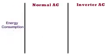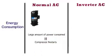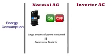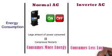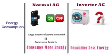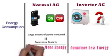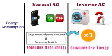In case of normal AC, a large amount of power is consumed every time the compressor restarts, and it is because of this frequent on and off that this type of air conditioner consumes more energy. Whereas inverter AC consumes less energy. The reason is that when the compressor stops and restarts in a normal AC, the current required to start the compressor is 3 times higher, hence the normal AC consumes more energy.